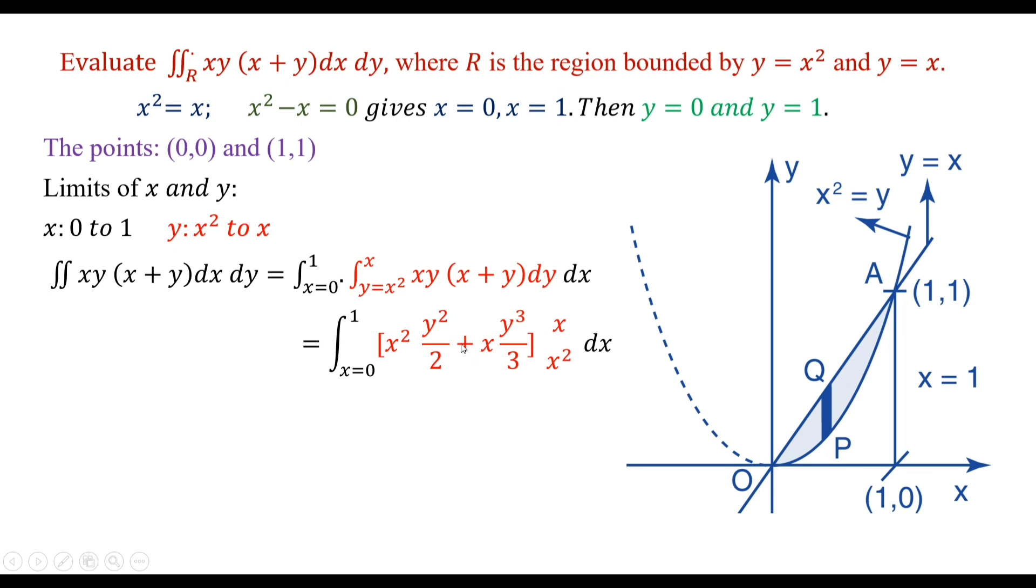Plus, when we integrate with respect to y while x is constant, x times y square integration gives y power 3 by 3. Consider the limits between x square to x. Simplify this expression after substitution of the lower limit as x square and upper limit as x. It gives us 5 by 6 x power 4 minus 1 by 2 x power 6 minus 1 by 3 x power 7 after simple algebraic calculation.